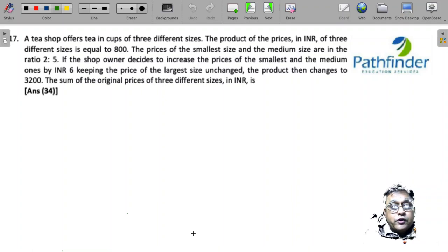CAT 2021 slot 3 question number 17. A tea shop offers tea in cups of three different sizes. The product of prices in INR of these three different sizes is equal to 800. So there are three different prices, p1, p2, and p3, and their product is given to be 800.